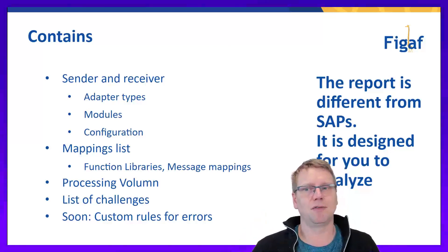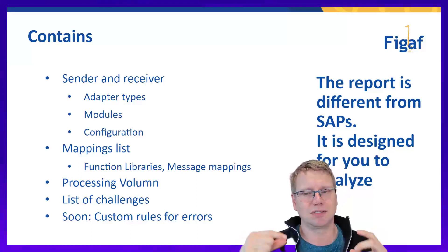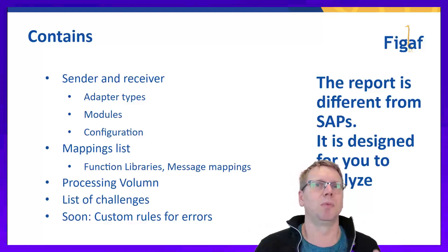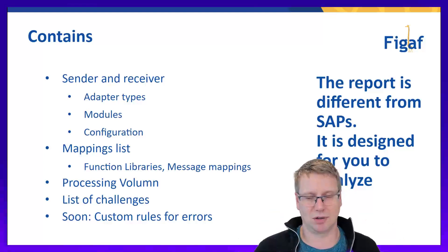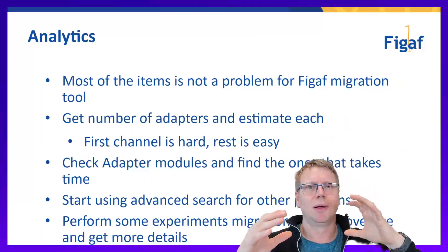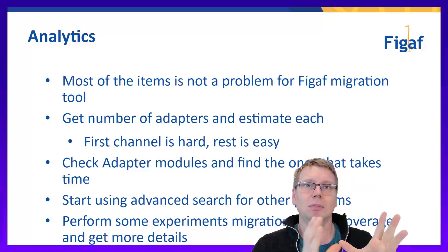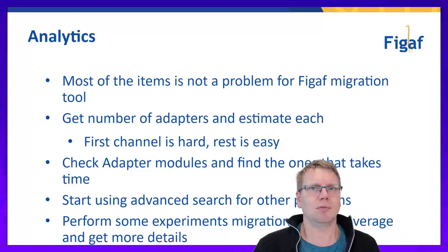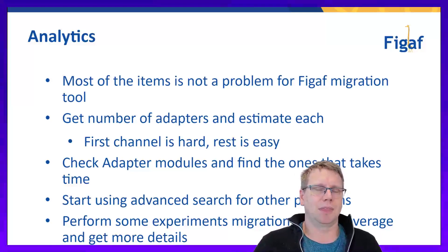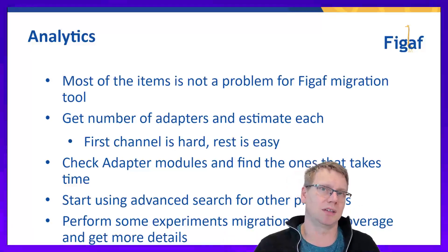The report is different from SAP's. This is one that is designed for you to analyze the content. It does not come up with the medium and hard components. This brings us back to a little about the way you should be looking at this report. In general, most of the things you would see in this report are not really a problem for the VGAV tool that can migrate these things. We highlight some of them because they were previously a problem, but now it's not really a problem — though it can obviously still be a problem for the SAP migration tool.